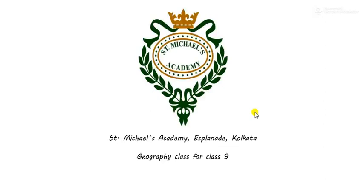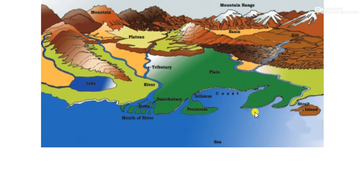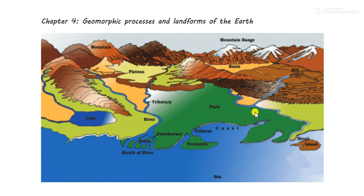Good morning Class 9 and welcome to the geography class. In the last class we were studying Chapter 4: Geomorphic Processes and Landforms of Earth, and we had already studied the plate tectonic theory, fold mountains, and volcanic mountains. Fold mountains are formed due to the divergence and convergence of tectonic plates, while volcanic mountains are formed due to the eruption and solidifying of lava on the earth's surface, creating a huge mountain.